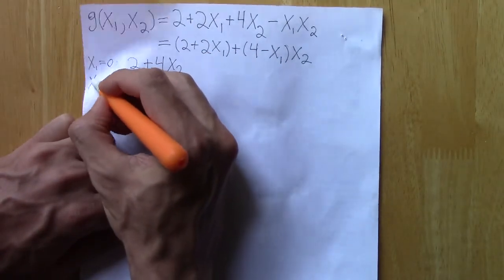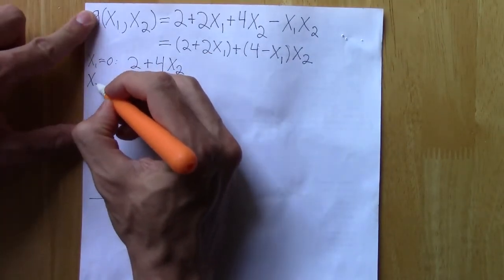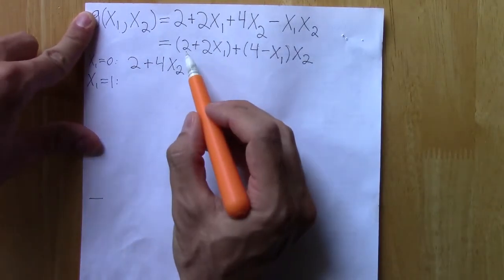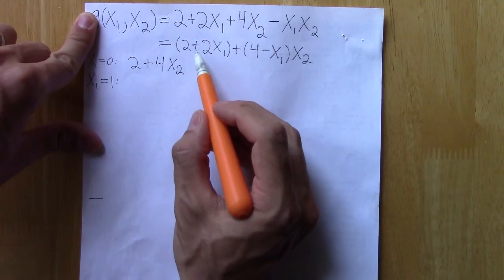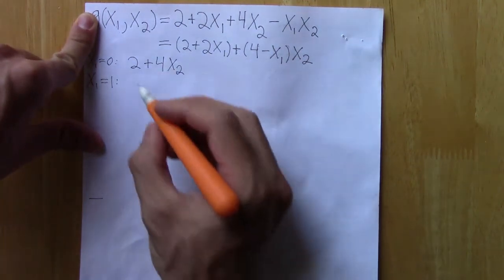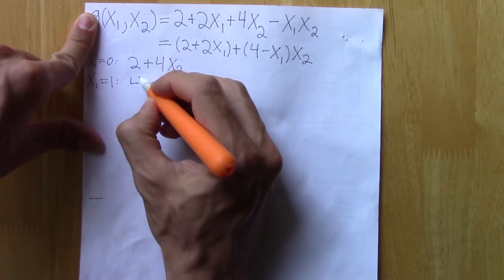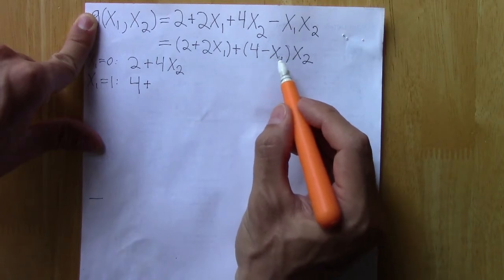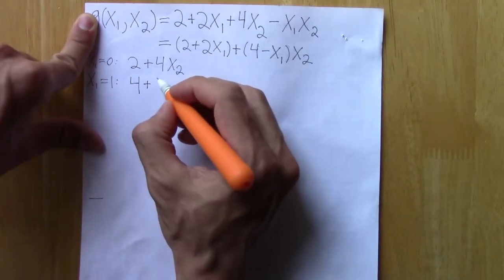We could plug in x₁ equal to 1. Then the intercept would be 2 plus 2 times 1, or 2 plus 2, which is 4. And then the slope would be 4 minus 1, which is 3.